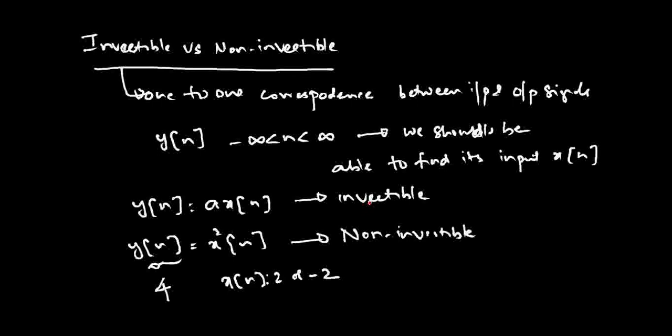To summarize, we have seen six types of system classifications: first, static versus dynamic systems; second, time-invariant versus time-variant systems; third, linear versus non-linear systems; fourth, causal versus non-causal systems; fifth, stable versus unstable systems; and sixth, invertible versus non-invertible systems.